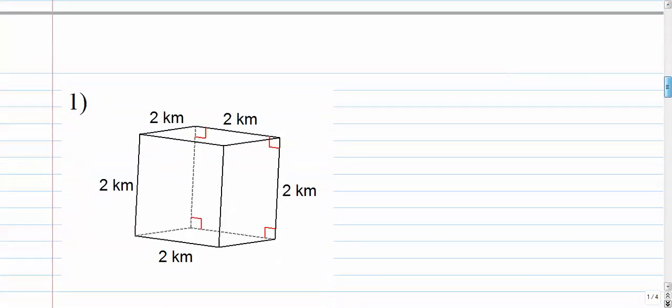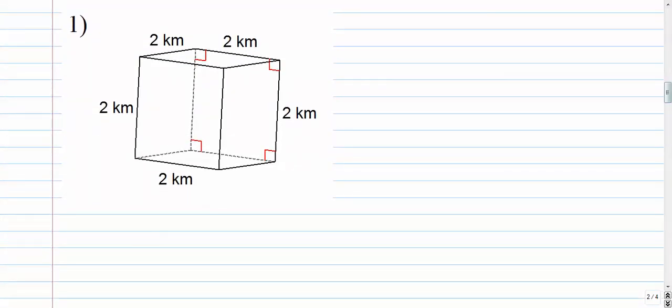Alright, here we go. Number one. The volume of this cube is side to the third power. Now some of these are kind of extraneous, right? If you have two up here and down here, you don't have to use both of them. So it might help you to just get rid of them.